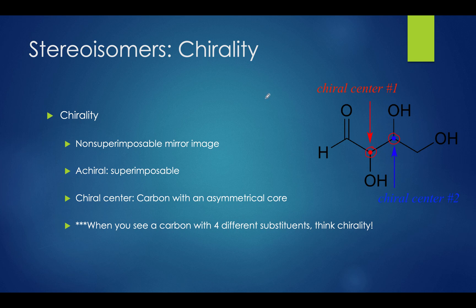If you follow the rules from the previous video, starting from the most prioritized group and working your way around to the next most prioritized group, you'll find that both carbons form S carbons by rotating in that direction. Whenever you see a carbon with four different substituents — an achiral carbon — think of chirality and think of R and S forms.